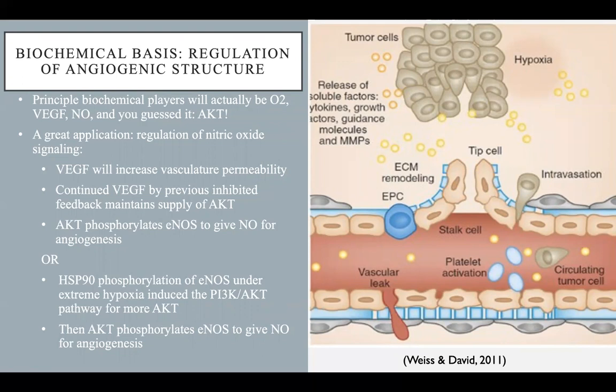Alternatively, in extremely hypoxic scenarios — because there are always backup plans — HSP90 phosphorylation of eNOS residues can induce the PI3K-AKT pathway to give more AKT as the better phosphorus donor, again yielding the same angiogenic nitrous oxide precursors. There is a feeling that backup plans still prefer activation of the AKT pathway for availability of angiogenic precursors.